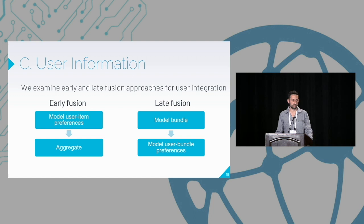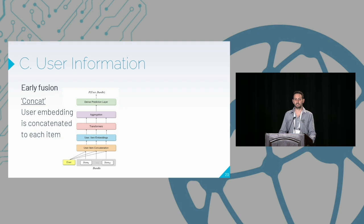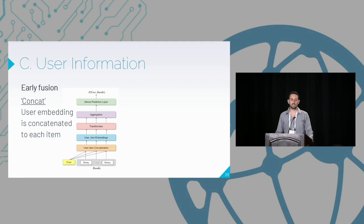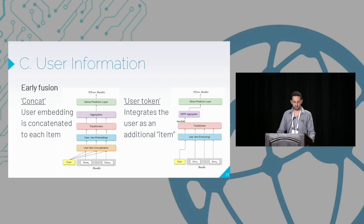For early fusion, we suggest two architectures. The first is the concat architecture, where we concatenate the user with each item and pass them into the transformer, allowing it to learn user-item interactions and represent contextual embeddings of user-item pairs. The second is the user token architecture, where we integrate the user as an additional artificial item in the bundle passed to the transformer, and use the output of the user classification token as the bundle representation — similar to what was suggested in the BERT paper.